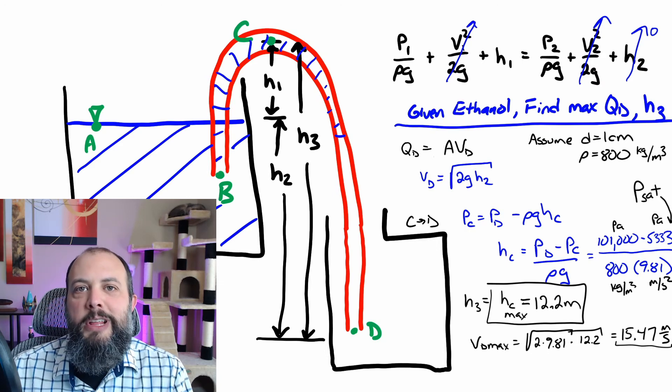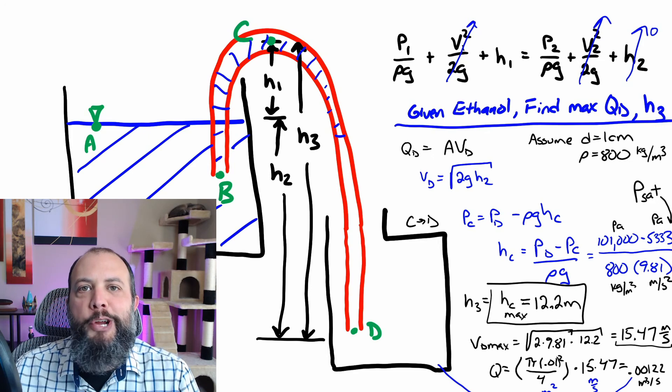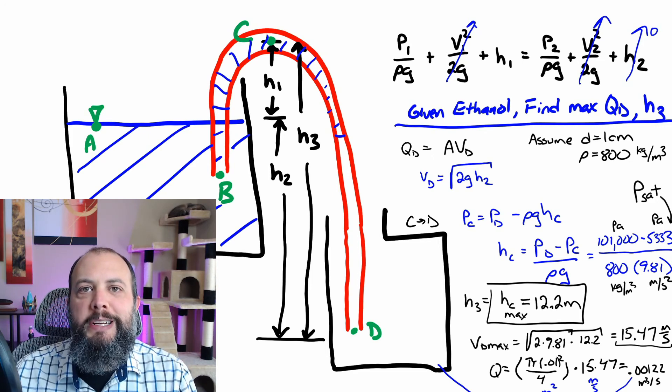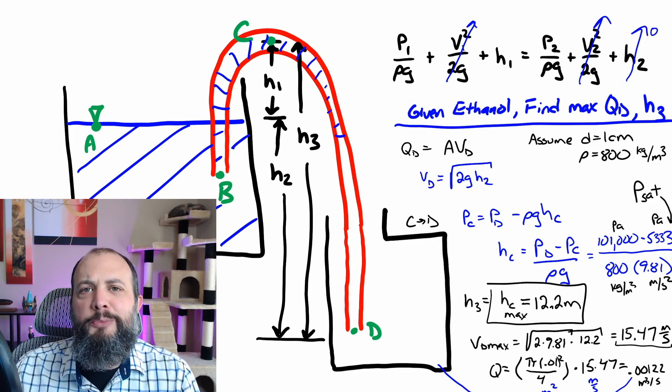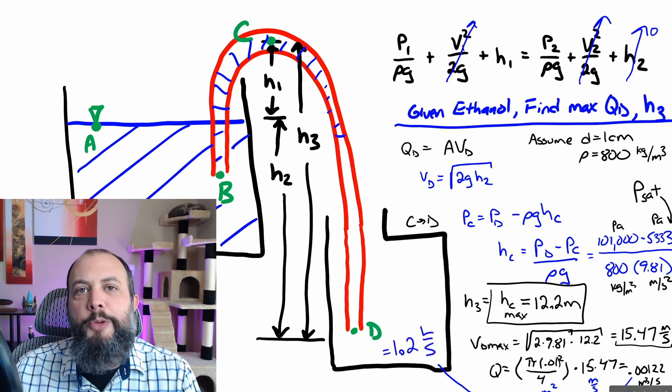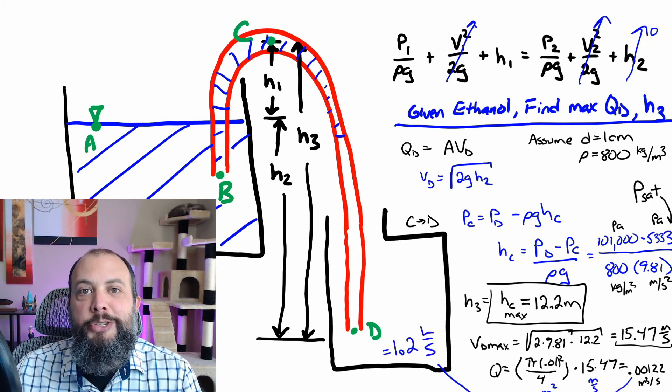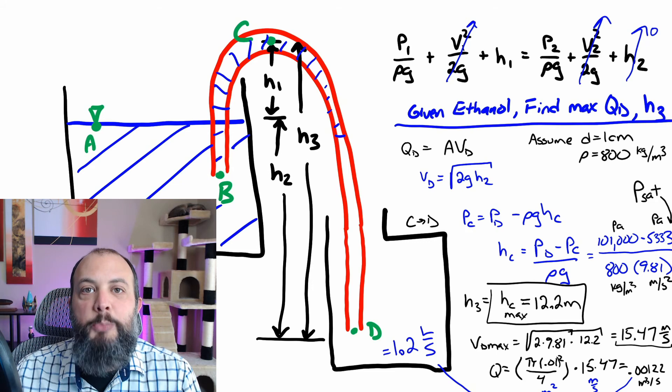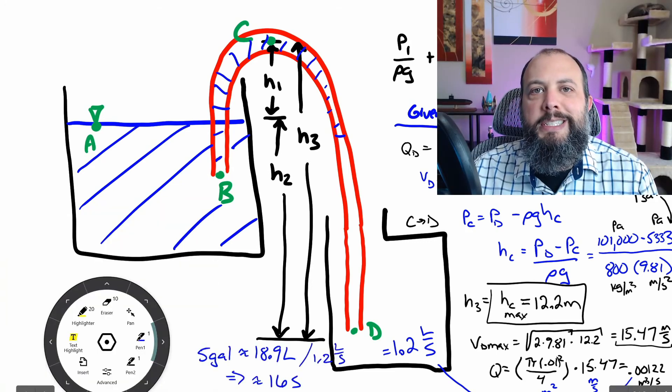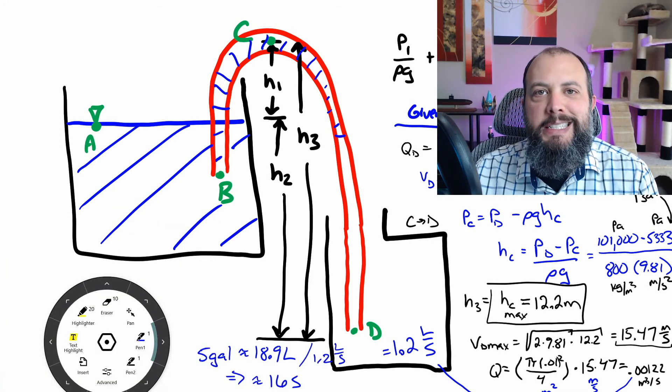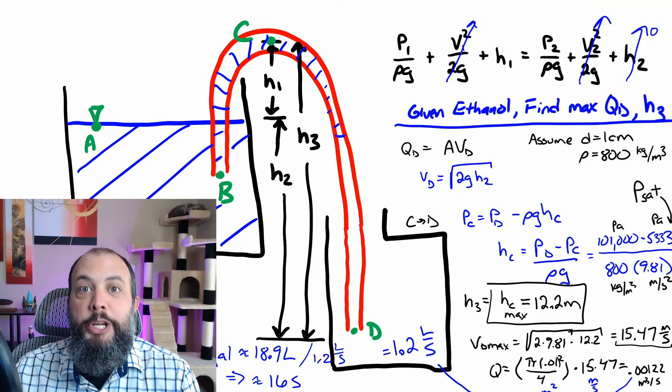So I plugged in that number then for velocity, found a little over 15 meters per second, plugging everything into the volumetric flow rate equation 0.001 meters cubed per second, which is not the most useful unit when siphoning. It's maybe more useful to compare that to liters per second. So 1.2 liters per second. And some quick math. If you wanted to siphon five gallons of gas would take you about 16 seconds, which is actually pretty quick.